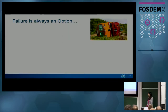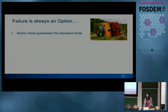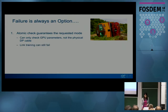Why was this needed? The basic loophole in atomic kernel mode setting was that failure is always an option - it was assumed the atomic commit phase would always pass, and the mode was always guaranteed. But with link training, when dealing with actual hardware, it guarantees the requested mode only by checking GPU parameters, not the actual physical cable. So link training can still fail and the atomic commit can still fail - we need to handle this case.